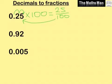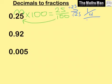Now we simplify 25 over 100. Dividing the top by 25 gives us 1, and dividing 100 by 25 gives us 4, so we end up with one quarter.